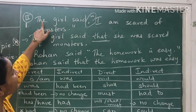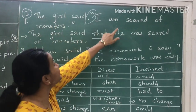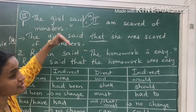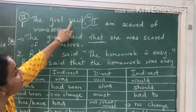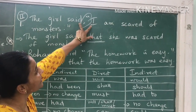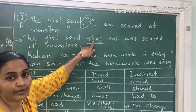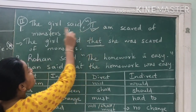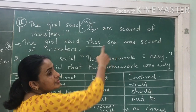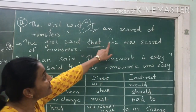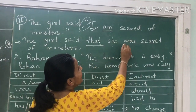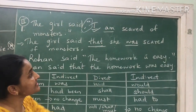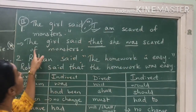The second type of sentence is: the girl said, "I am scared of monsters." So how do we change it to indirect? The girl said — for connecting both sentences we use the word 'that'. The girl said that. Now who is 'I'? I is the girl, so for the girl we will use 'she'. That she — 'am' is present tense, so 'am' will become 'was'. She was scared of monsters.